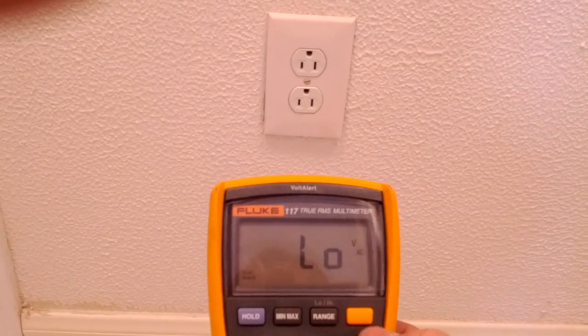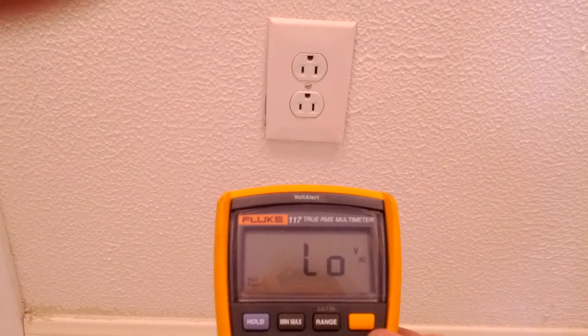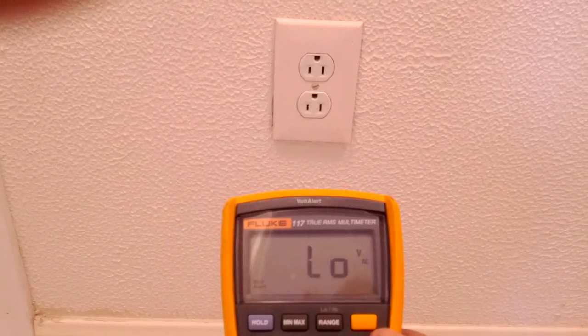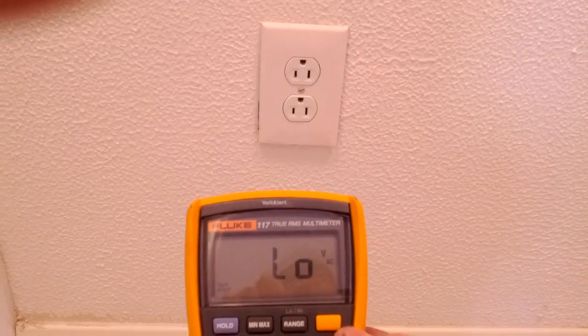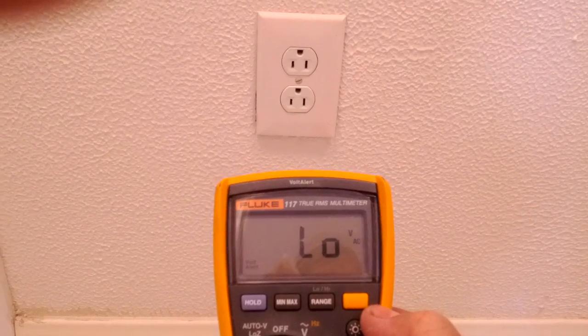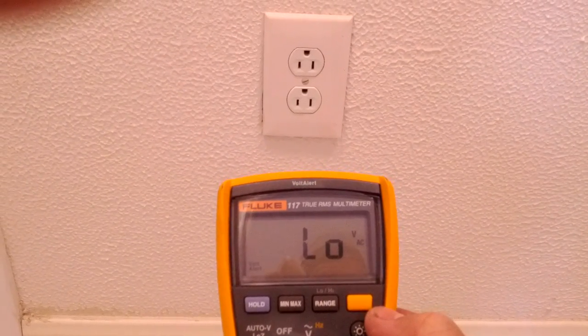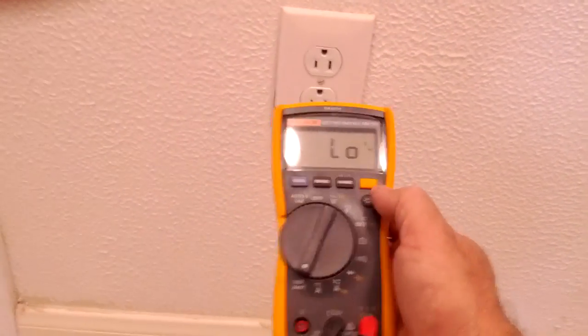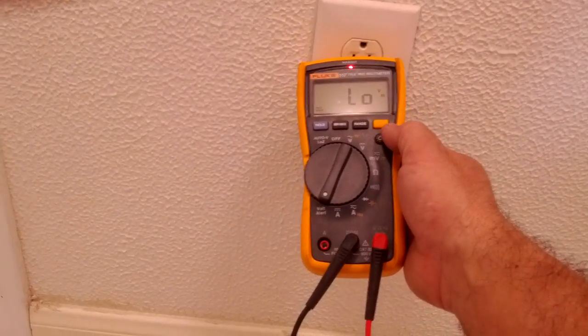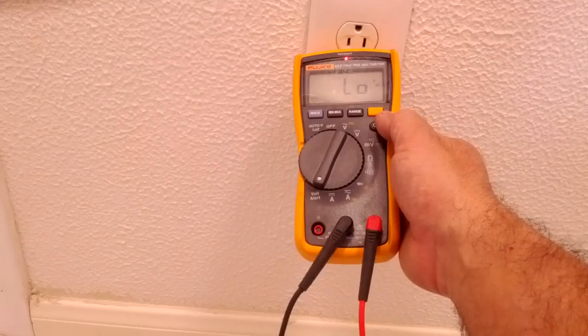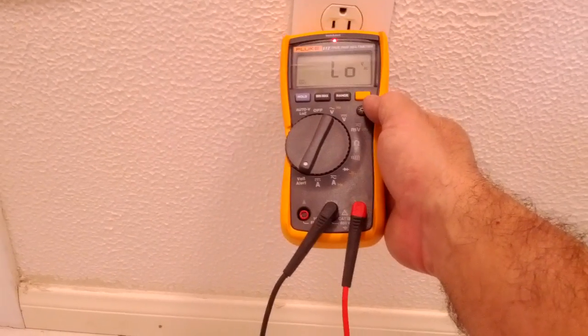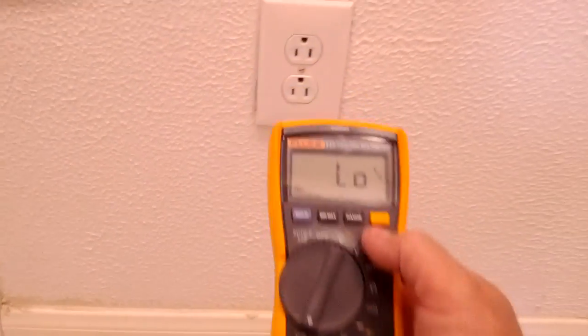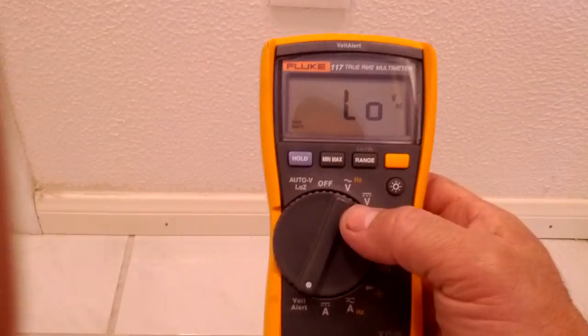The low setting is not so sensitive, so if you wanted to test a particular outlet or if you needed to get close to some wires without it going off too far away so that you can identify the wires that you're trying to test or the receptacle, it'll allow you to get closer, right up to about an inch, which is about where some of your sensitive non-contact voltage testers end up.